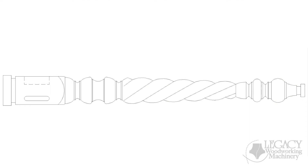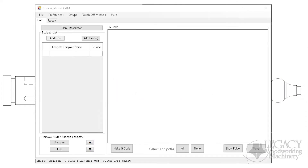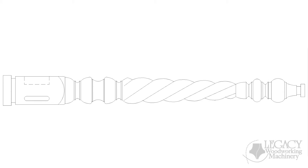Let's do this again, except this time smarter and faster with Legacy's Conversational CAM spindle software. Using the same 2D CAD drawing of the spindle, we're ready to create a 3D model, right? Well, not anymore. Conversational CAM only needs a few dimensions from the 2D drawing.